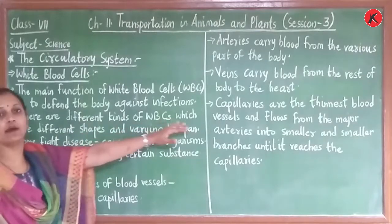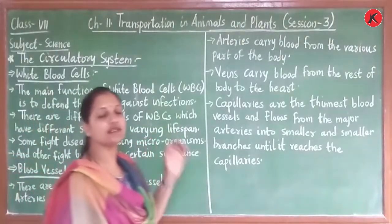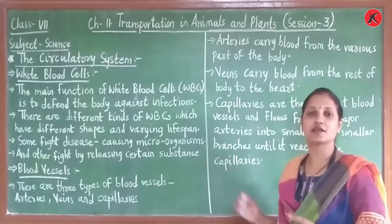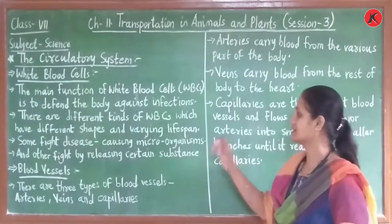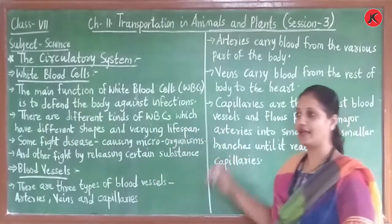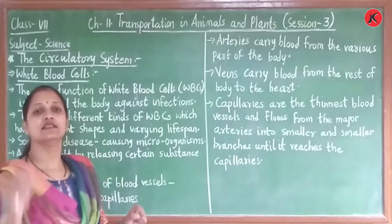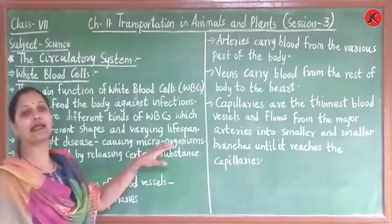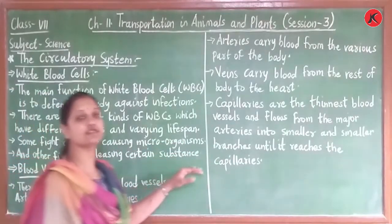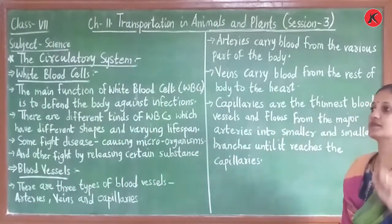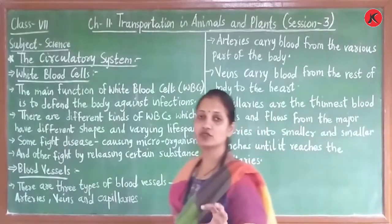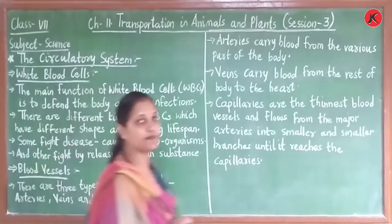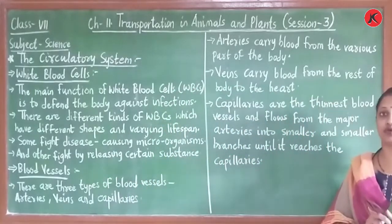There are different kinds of WBC which have different shapes, varying size, and varying lifespan. WBC different shapes के और different size के होते हैं, और वो different functions करते हैं — कि कौन से infection से वो कैसे fight करते हैं। Some WBC can live for many days, some have a very short lifespan. Some fight disease-causing microorganisms and others fight by releasing certain substances. कुछ WBC microorganisms को capture करते हैं, और कुछ WBC कुछ substances release करके infection को fight करते हैं। यह जो WBC होते हैं, वो हमारे body की immunity system होती है।